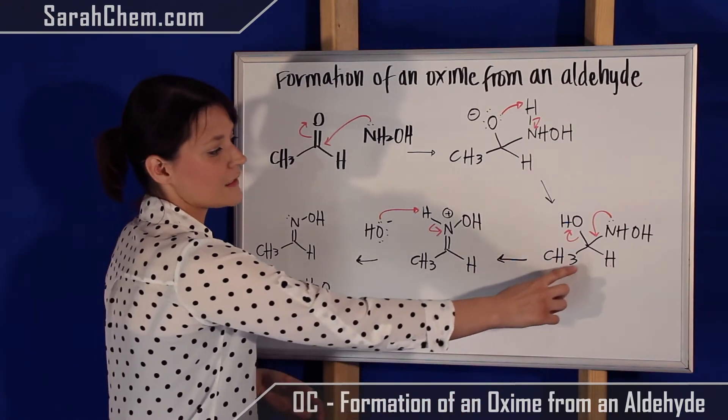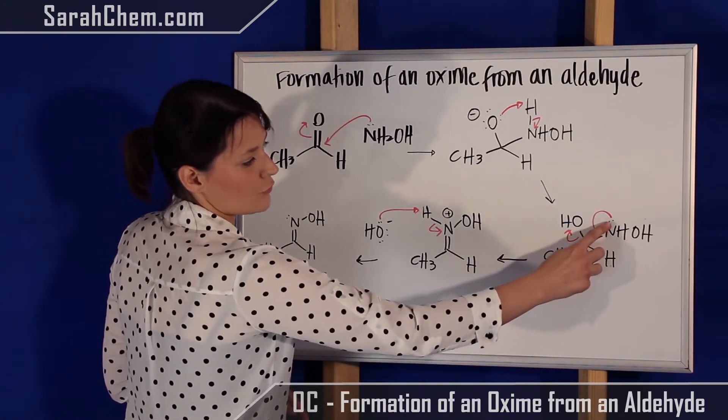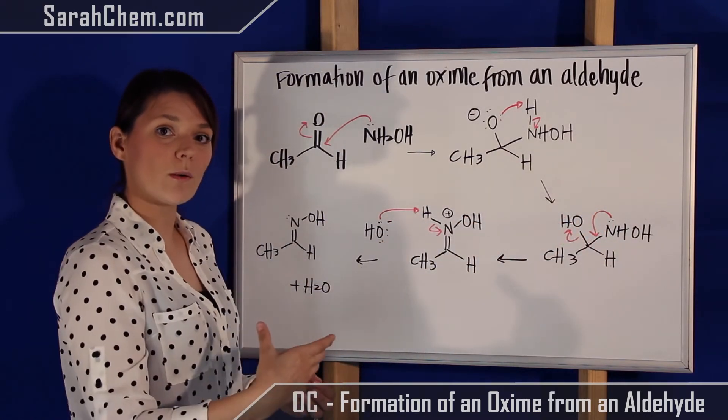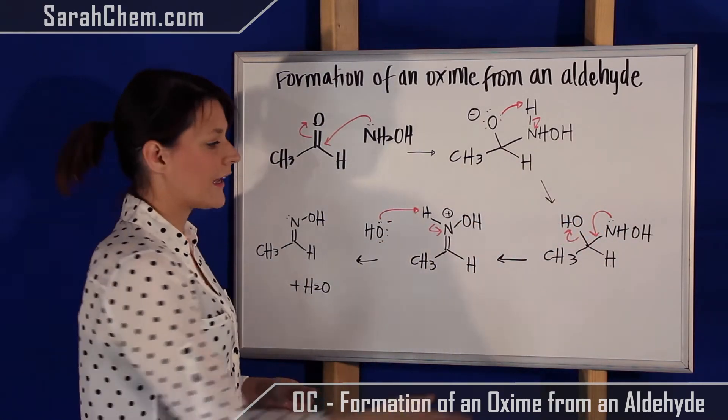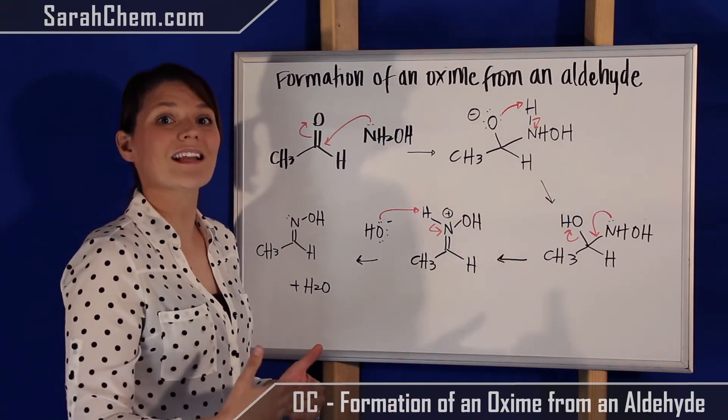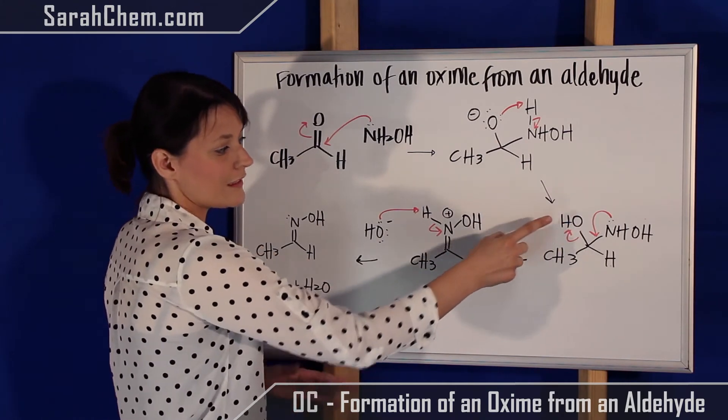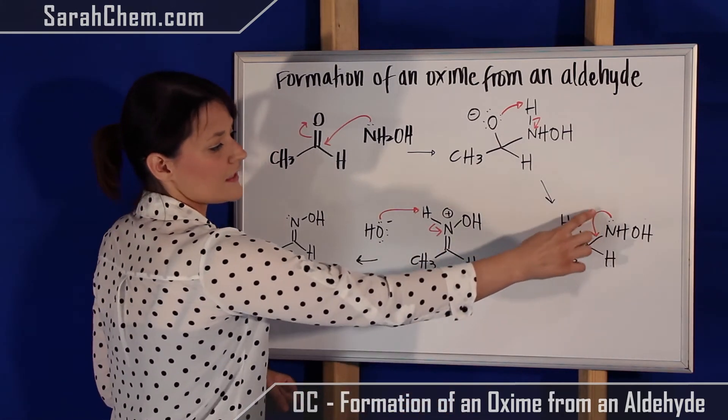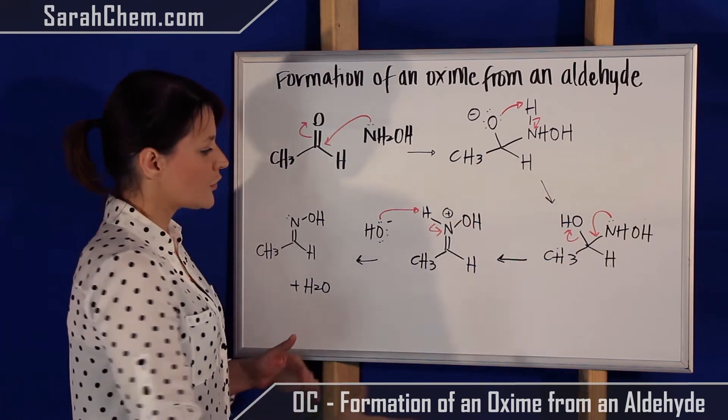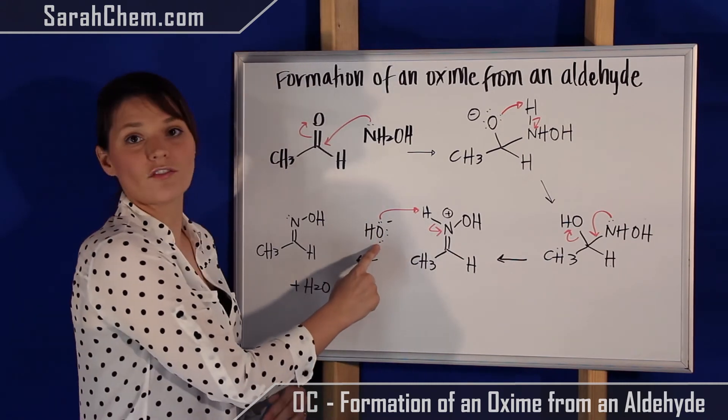We need to shut this back down to an sp2 carbon. What will happen is that this nitrogen with that lone pair is going to push its lone pair down to reform the pi bond. Once again, this carbon would have too many bonds if we left it like that, so another bond will have to break. Because we've made this a relatively decent leaving group, when this one shuts down, we're going to be able to kick that OH group off. At the end here, we've regained that sp2 hybrid, and now we've kicked off this group.